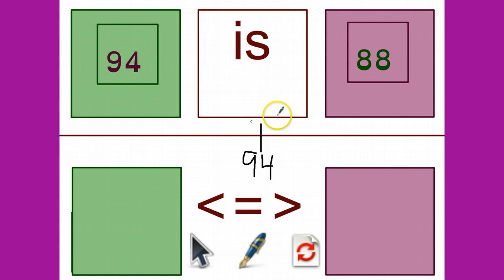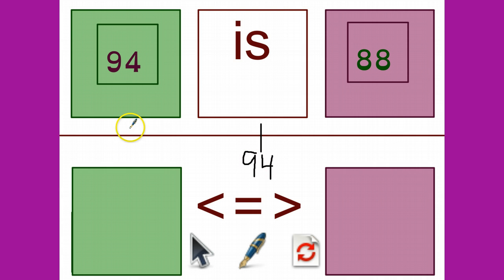Does 88 come before or after 94? Well, it has fewer tens than 94, so it's going to come before 94.